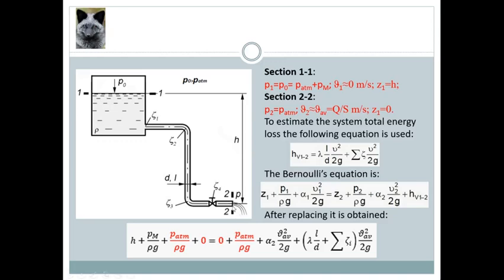After the section selection is performed, the next step to do is to specify their specific parameters such as absolute pressure P, average velocity V, and geodetic height Z. The absolute pressure P1 in section 1.1 may be presented as a sum of the atmospheric and manometric ones, while the absolute pressure P2 in section 2.2 is equal to the atmospheric one, because the liquid leaves the pipe free and leaks in the atmosphere.